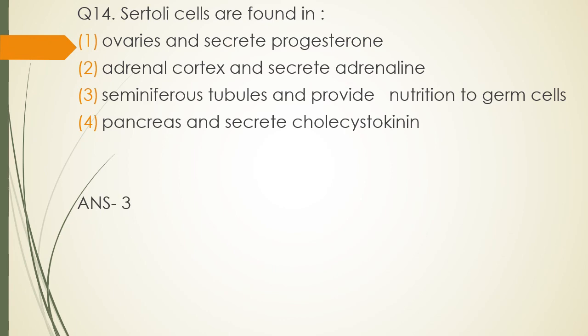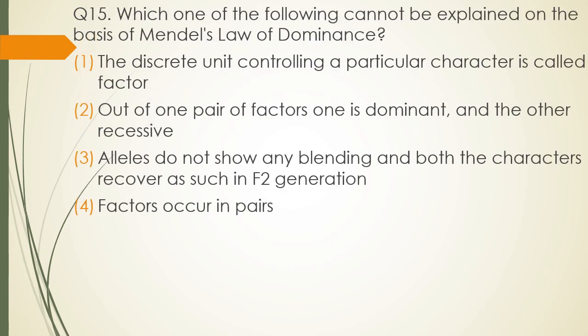Question 15. Which one of the following cannot be explained on the basis of Mendel's law of dominance? Option 1: Discrete units controlling a particular character are called factors. Option 2: Out of one pair of factors, one is dominant and the other is recessive. Option 3: Alleles do not show any blending and both characters recover as such in F2 generation. Option 4: Factors occur in pairs. We are talking only about the law of dominance. The correct answer is option 3 — it cannot be explained based on Mendel's law of dominance.